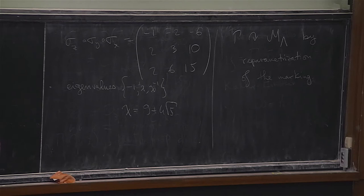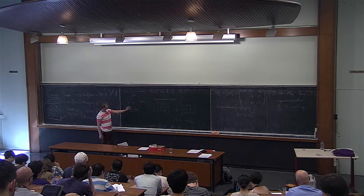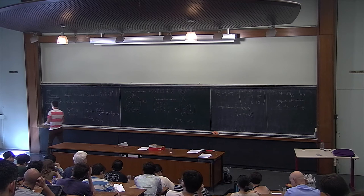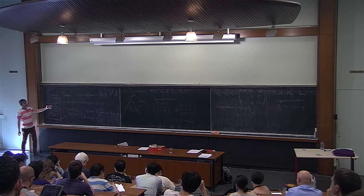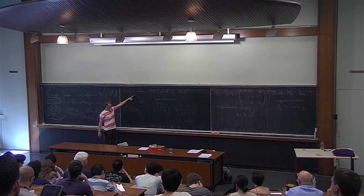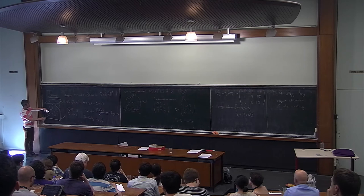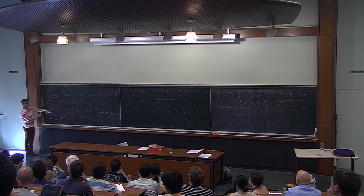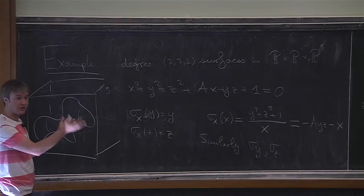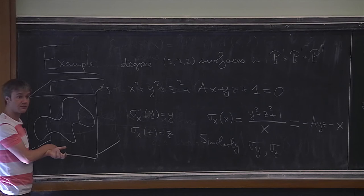Geometrically, sigma_x and sigma_y will each preserve one of the elliptic curves, and the composition will twist along each of the elliptic curves in a manner that varies as you move along the fibration. So it is like a twist preserving the fibration. Each of sigma_x, sigma_y, sigma_z has determinant minus 1, so their product also has determinant minus 1, and for a transformation with a typical (2,1,1)-type matrix you would need to take a product of four involutions.